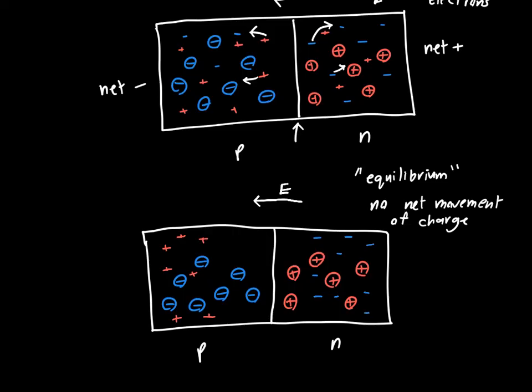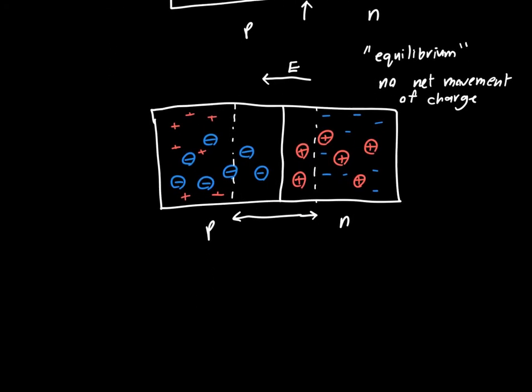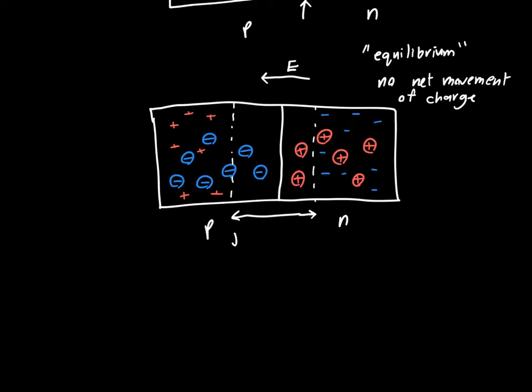Here, I haven't drawn the holes that have come over to the n-side because we're assuming there's few enough holes that it didn't appreciably change the concentration of electrons, at least within this certain region. This repulsion of charges has caused this region to be free of mobile charge. That's interesting. We call this the depletion region.